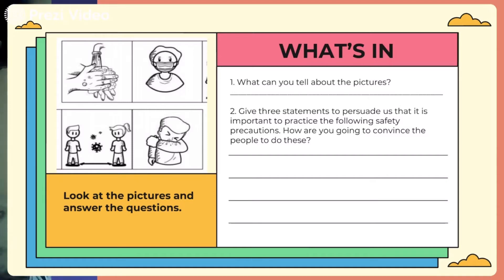On the third picture. Correct. We see two people having social distancing, or what we call physical distancing, when we see people outside.